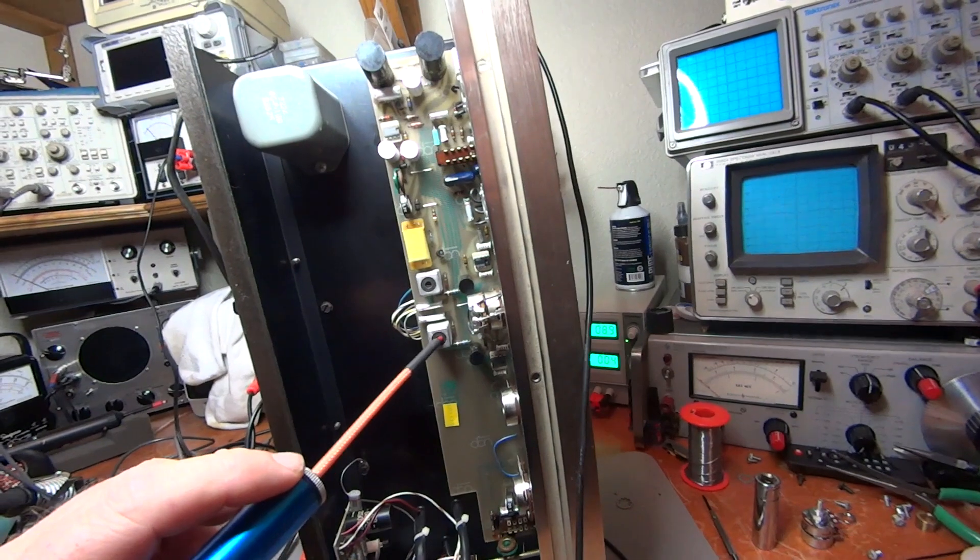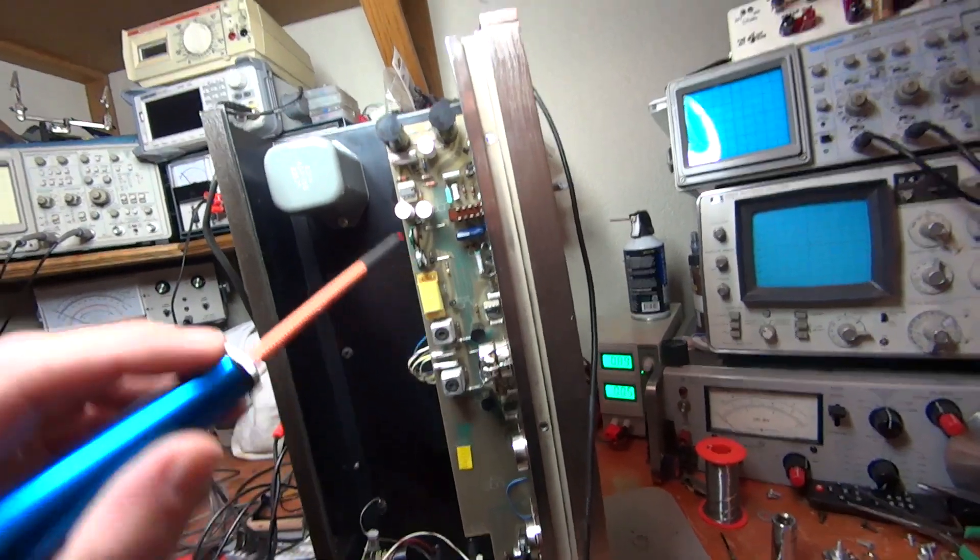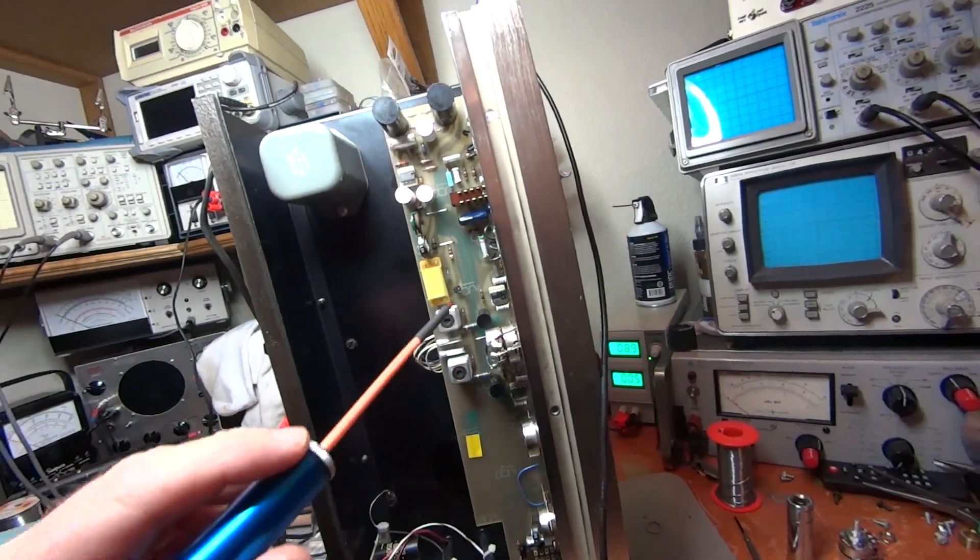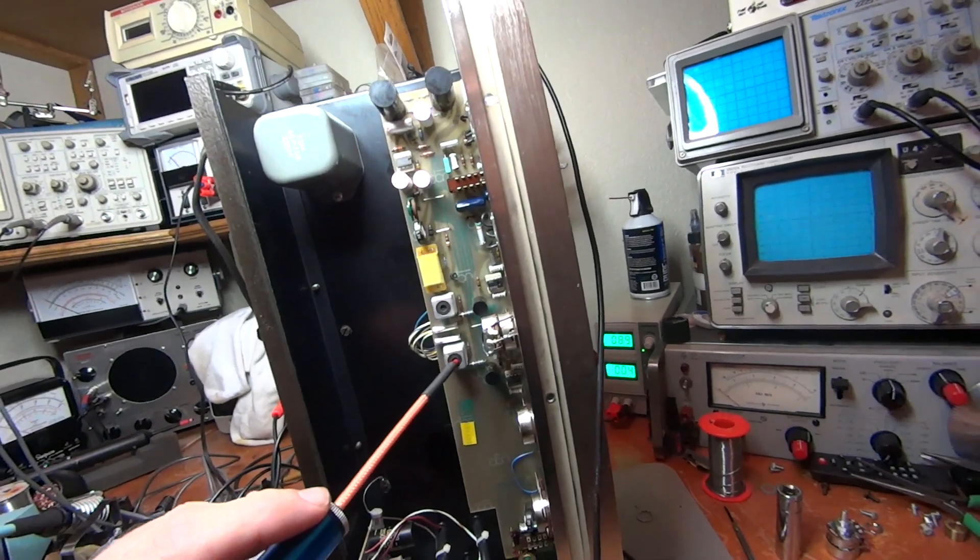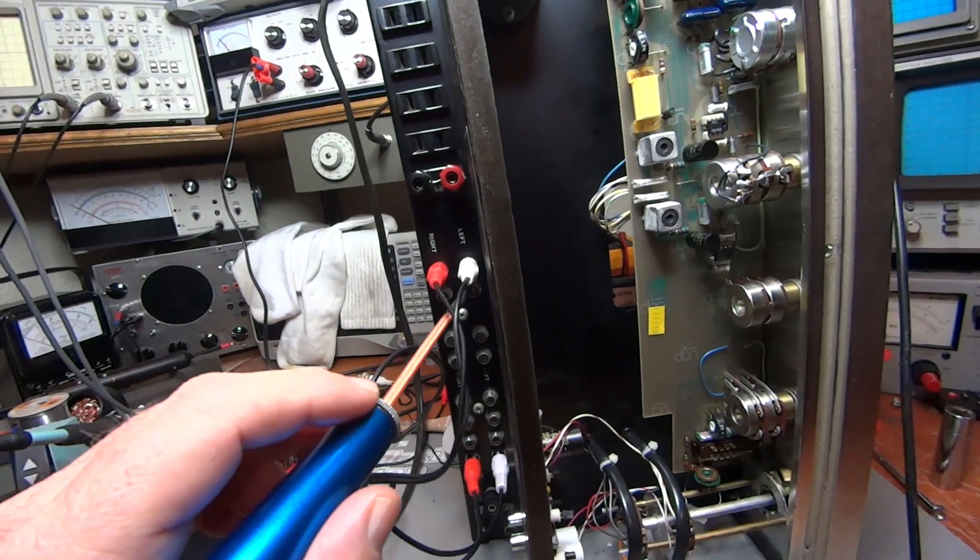We know from the schematic that if that relay were energized, we'd be seeing signal right here. But because the relay is not energized, more than likely either this transistor is bad or this JFET is bad. By the way, it's not this transistor, it's the JFET. When we go to the output, we have nothing - the output's just plain dead.